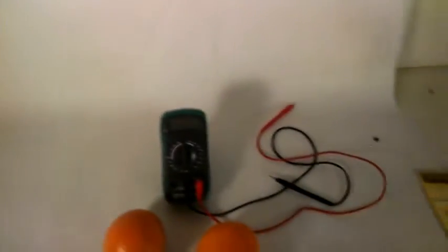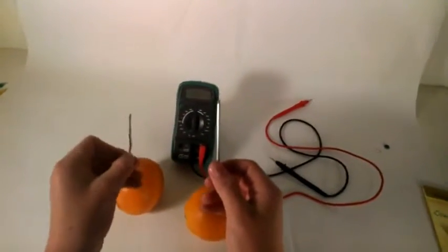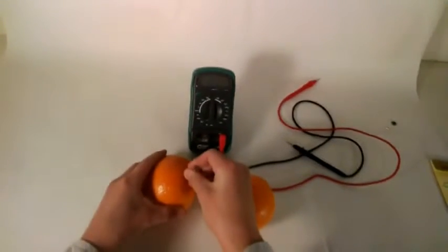So we're going to start with the oranges. Here are my oranges. I've got a pad here so I can write everything down. How we're going to do this is we're going to take a zinc nail and a piece of copper, and we're going to just stick them into an orange, just like that.